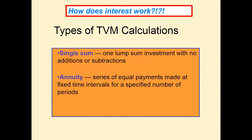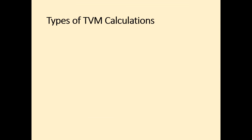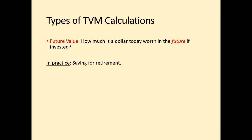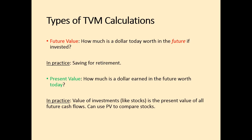There are two types of calculations: future value and present value. Future value asks how much a dollar given to you today is worth in the future if you invest it — for example, if you put money away for retirement today, how much will it be worth when you retire? That's a future value problem.